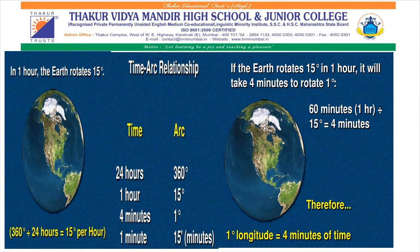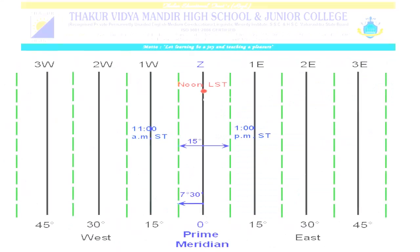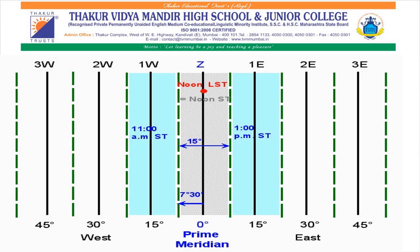If it is 12 noon in Greenwich, it would be 12:04 pm at the 1 degree meridian. To remember easily, just remember that at every 15 degrees there is a 1 hour gap. So if there is 12 noon at 0 degree meridian, at 15 degrees east there will be 1 pm, at 30 degrees east there is 2 pm, at 45 degrees east there will be 3 pm, and so on.